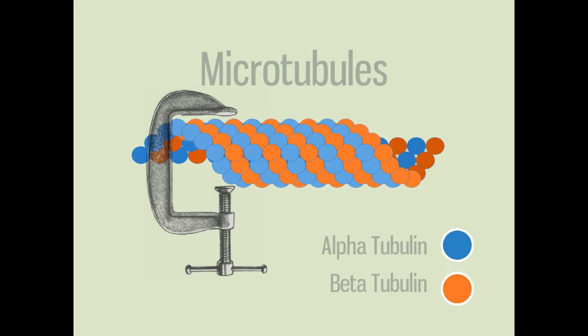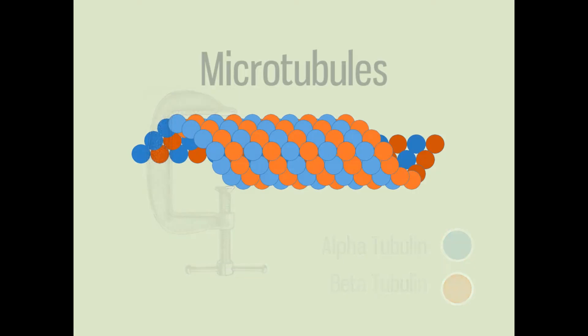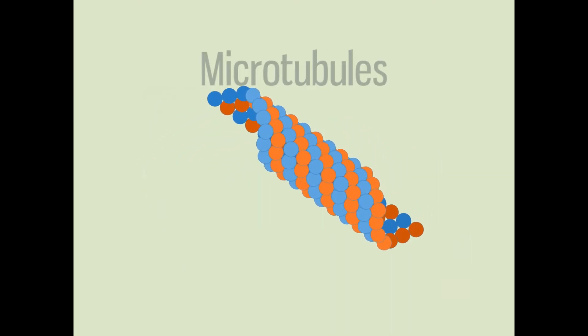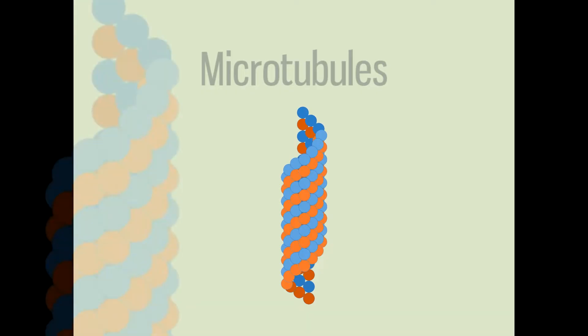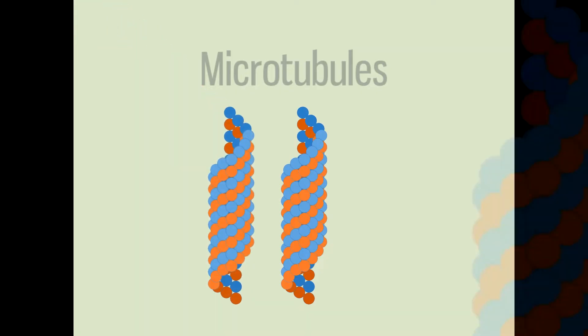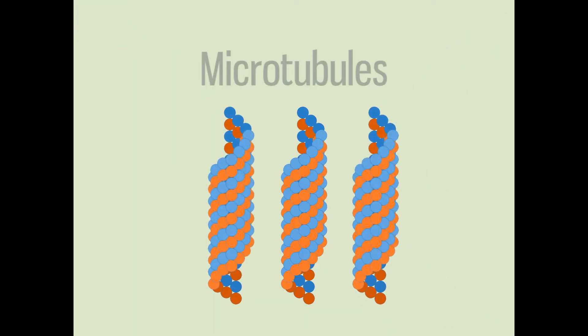This strength allows microtubules to maintain the overall shape of the cell. Like steel beams in a tall building, microtubules are like girders that protect a cell from collapse.